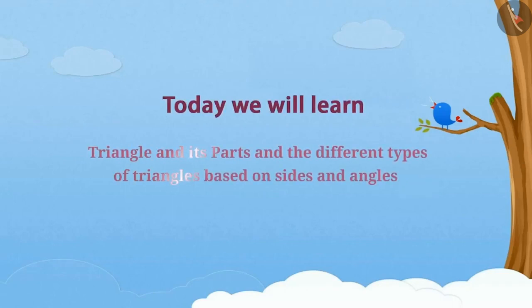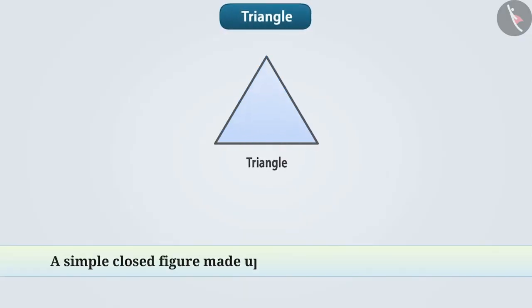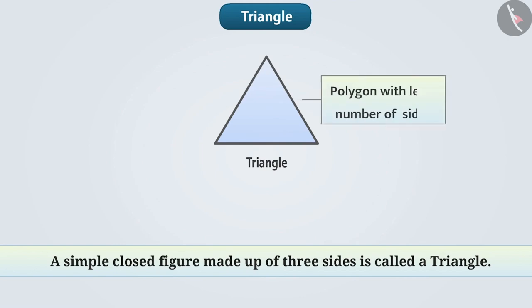Today we will learn triangle and its parts and the different types of triangles based on sides and angles. A simple closed figure made of 3 sides is called a triangle. The triangle is the polygon with least number of sides.